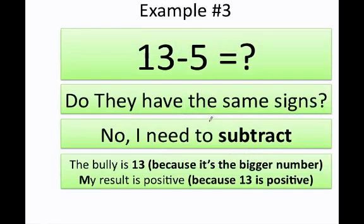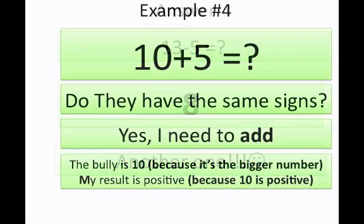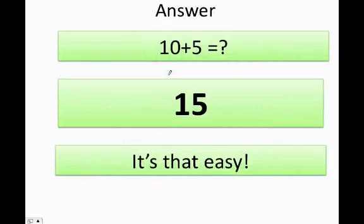Let's do another one. 13 minus 5 — you can clearly see you have different signs, so I need to subtract. The bully is 13, therefore my result is going to be positive: 13 minus 5 equals 8. Now you tell me: 10 plus 5. As you can see, I have equal signs, so I'm going to add. The bully is 10, so my answer is going to be 15.